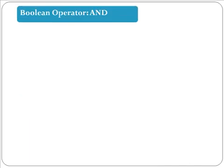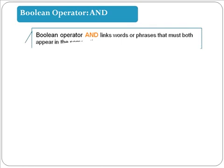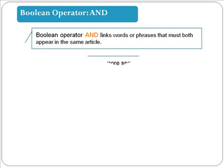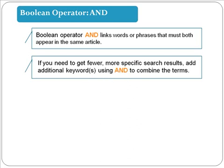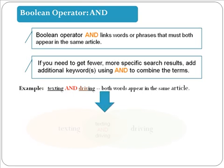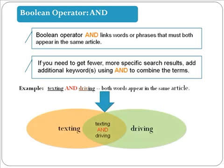The Boolean operator AND links words or phrases that must both appear in the same article. If you need to get fewer, more specific search results, add an additional keyword to combine the terms. For example, if you have to write a term paper on the topic texting while driving, link the keywords texting and driving with the Boolean operator AND to retrieve the best results. This guarantees that both terms will be in the same article.